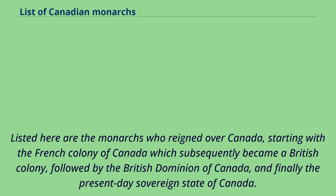Listed here are the monarchs who reigned over Canada, starting with the French colony of Canada which subsequently became a British colony, followed by the British Dominion of Canada, and finally the present-day sovereign state of Canada.